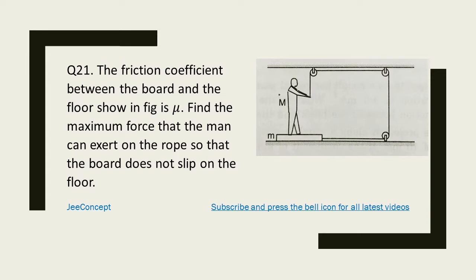The problem statement says the friction coefficient between the board and the floor shown in figure is mu. Find the maximum force that man can exert on the rope so that the board does not slip on the floor.